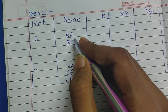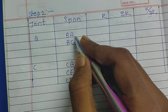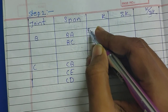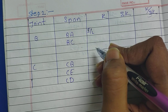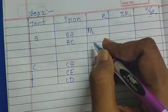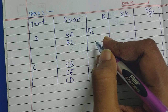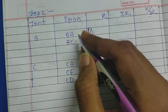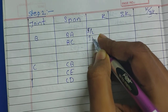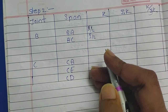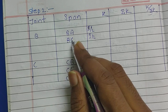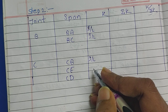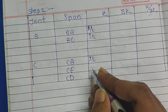When we look at span AB toward BA, end A is fixed, so the relative stiffness is going to be I/L. When we consider span BC and look at joint C, it is at the center of the frame, so it is also going to be I/L. When we consider span CE and see that joint E is fixed, it is also going to be I/L.